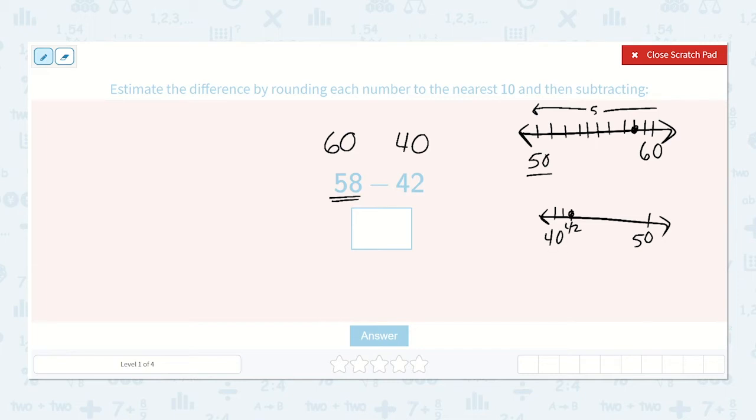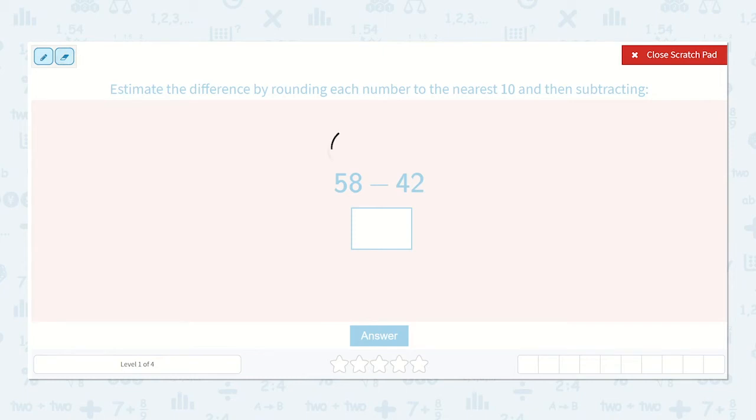All right, so this is rounded to 60 and this is rounded to 40. Now we can say 60 minus 40 is equal to, so if we think 6 minus 4 is 2, 60 minus 40 is 20. So our estimate is 20.